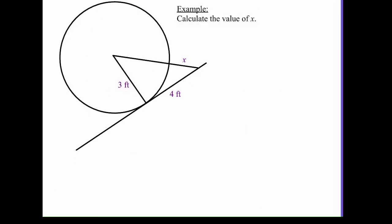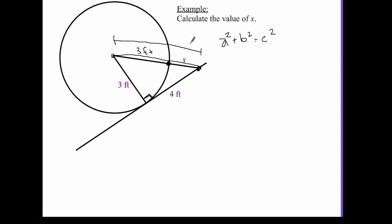Going to another example — calculating all the side lengths. I'm going to use the Pythagorean theorem: a squared plus b squared equals c squared. My hypotenuse is the entire length from the center all the way out to the new point on the tangent line. The length from the center to the circle is 3 feet, so this whole segment is 3 plus x feet — that is my hypotenuse, c. Then a and b are 3 and 4.